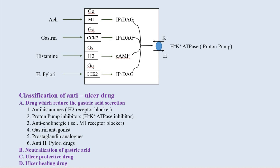To counter that mechanism or stop acid production, we have to use anticholinergics, gastrin antagonists, histamine antagonists, and anti-H. pylori drugs. Based on this mechanism, peptic ulcer drugs are classified into four main classes: first, drugs which reduce gastric acid secretion (involving six kinds of drugs); second, neutralization of gastric acid (antacids); third, ulcer protective drugs; and fourth, ulcer healing drugs.